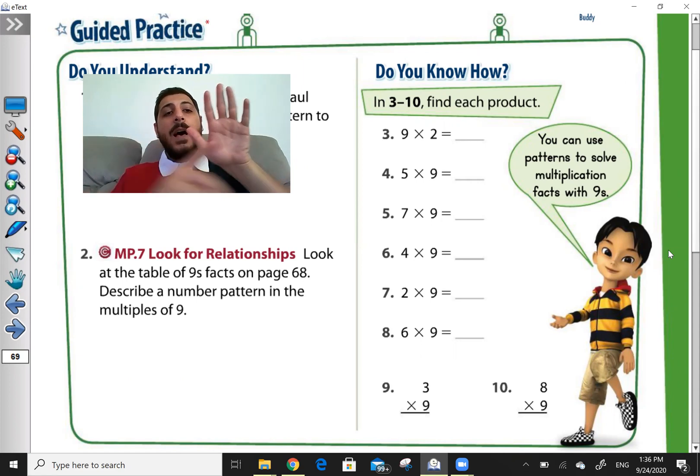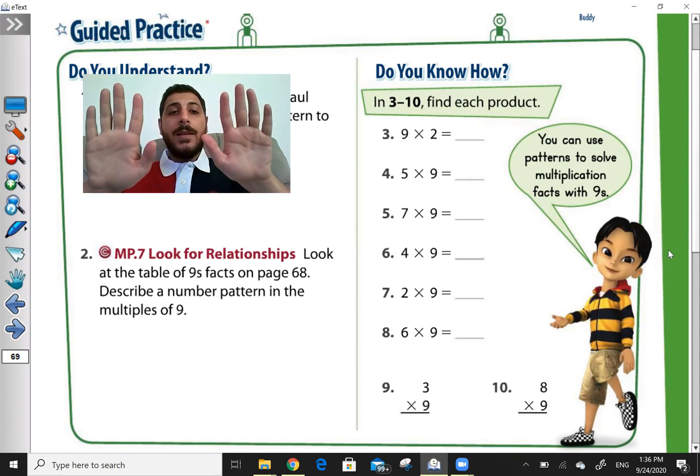I start from my small finger. This is finger number 1. So 9 times 2, I will find 2. Finger number 2. So 1, 2. How much before this finger do I have? Before it, I have 1.